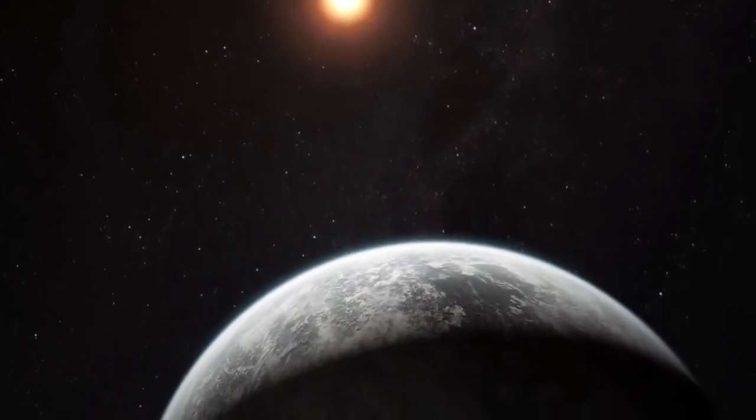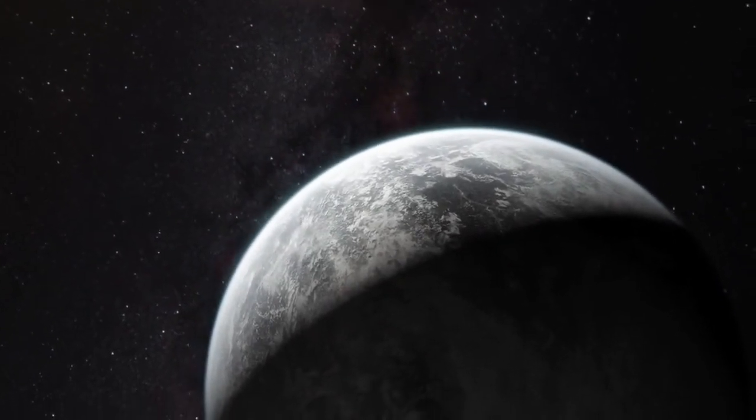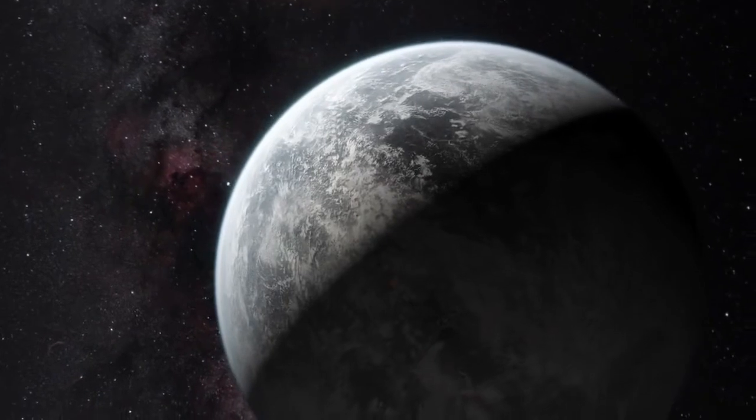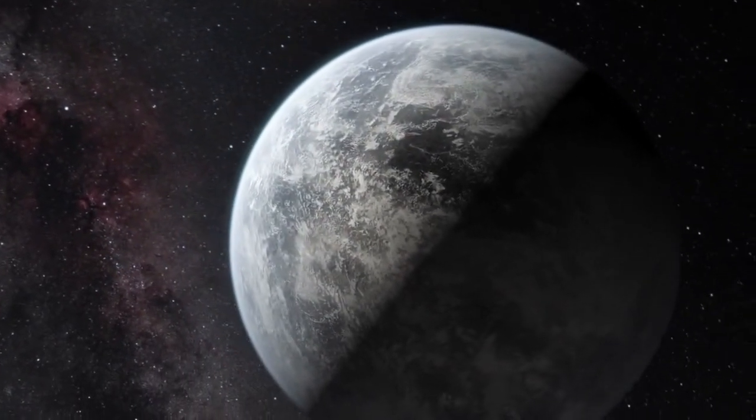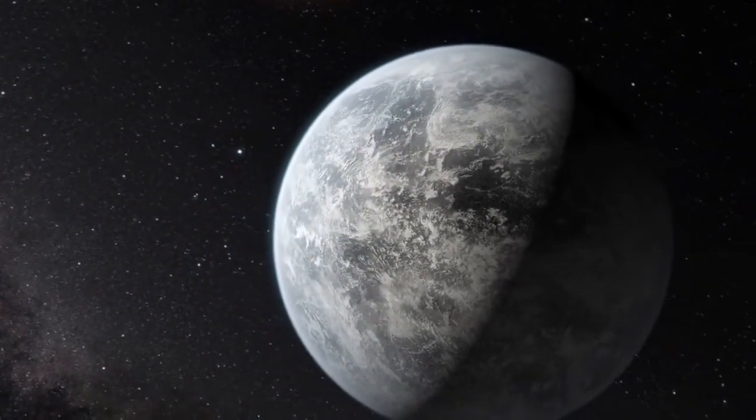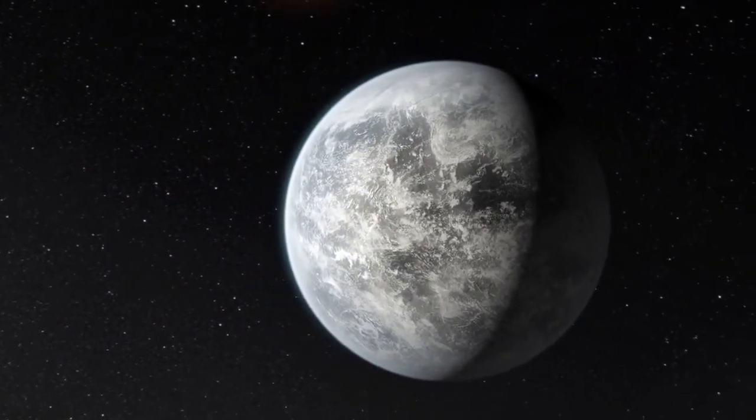One of the newly found planets, named HD 85512 b, orbits inside the habitable zone. This is the narrow area around a star where water can exist in liquid form. Astronomers estimate that liquid water could possibly be present on this planet, if it is a rocky world that has more than 50% cloud cover.